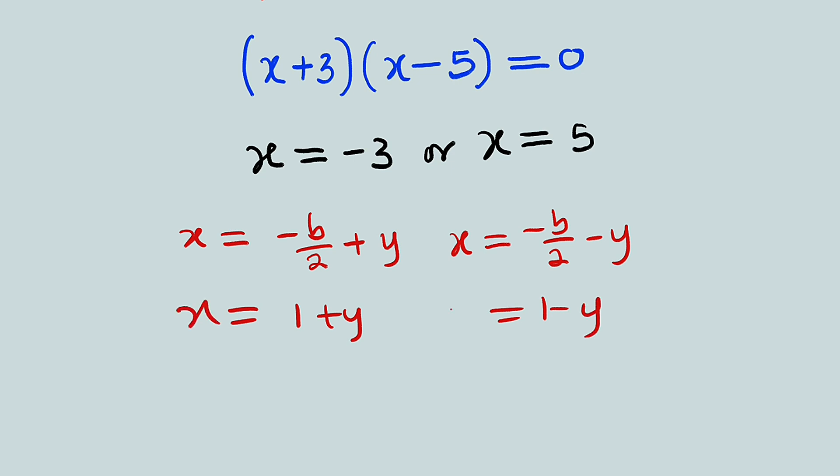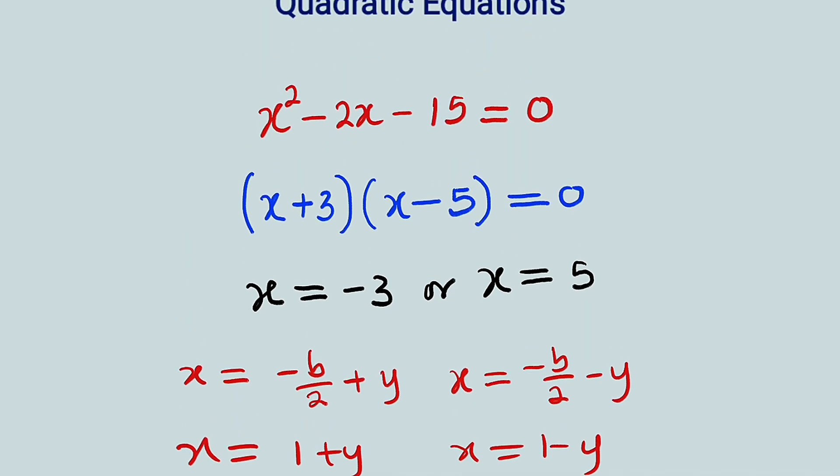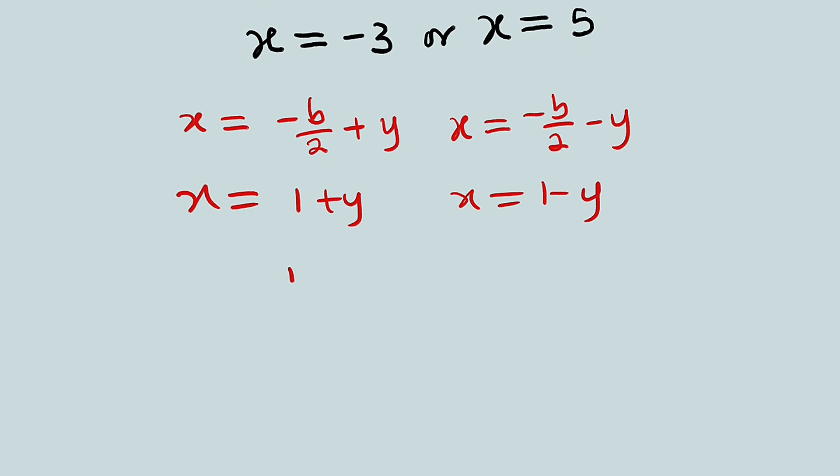So if you multiply them together, you're going to get negative 15, which is the constant. So let's do that. 1 plus y multiplied by 1 minus y. This is equal to negative 15.